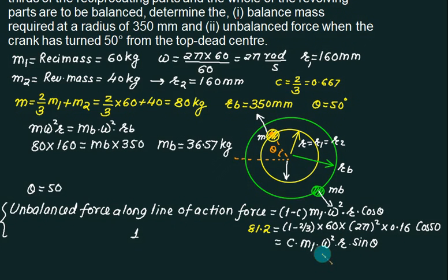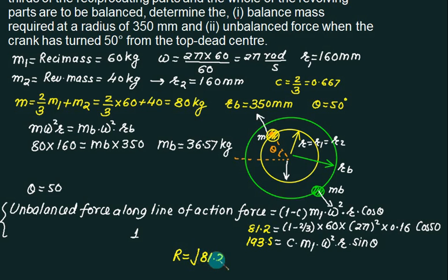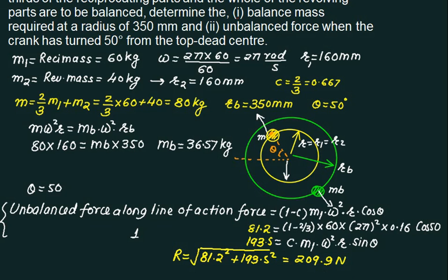The along-line component works out to approximately 81.2 N and the perpendicular component to 193.55 N. The resultant unbalanced force is found using Pythagoras: √(81.2² + 193.55²). The problem also asks to determine the unbalanced force when θ = 90°.